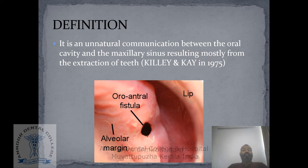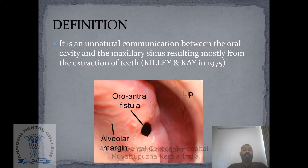When there is a fresh communication between the oral cavity and the maxillary sinus, we call it an oro-antral communication. When there is a long-standing communication with formation of a pathological epithelialized tract between the maxillary sinus and the oral cavity, we call it a chronic oro-antral fistula. It is a chronic phenomenon.